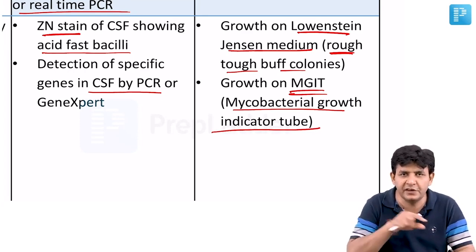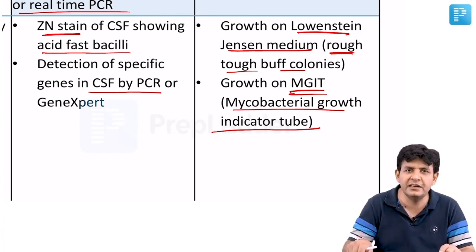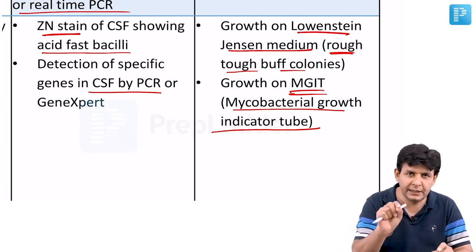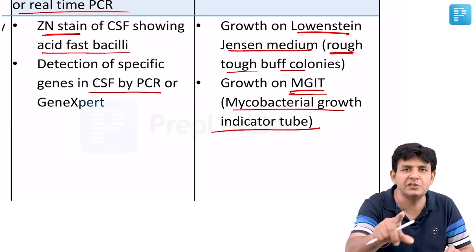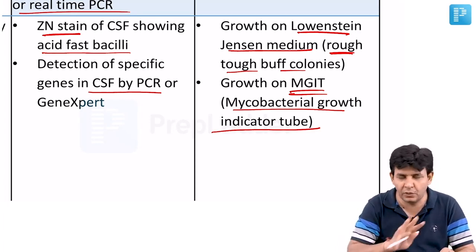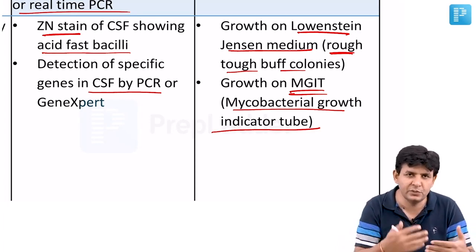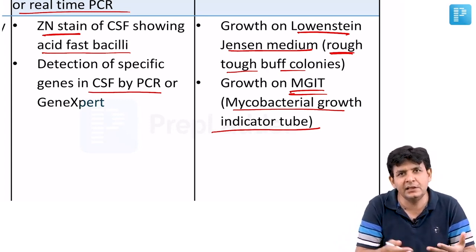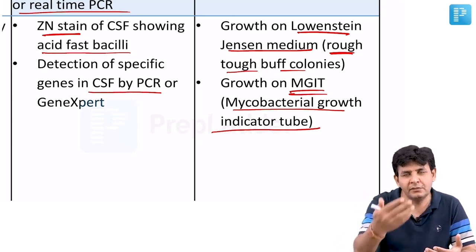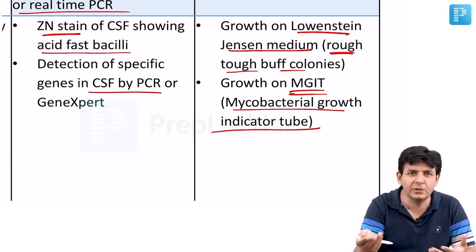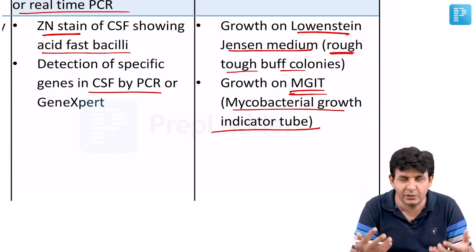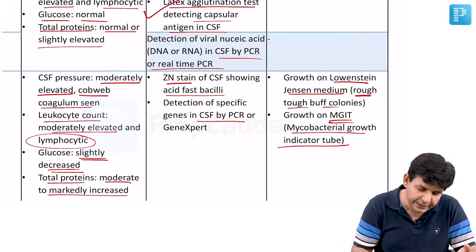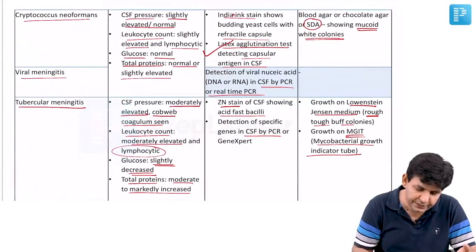This table will solve all your questions regarding meningitis. Focus on what is elevated and what is decreased. Examiners want you to understand concepts - like in viral and fungal meningitis glucose is not consumed, so it remains normal. They don't expect exact numerical values, just the conceptual understanding.